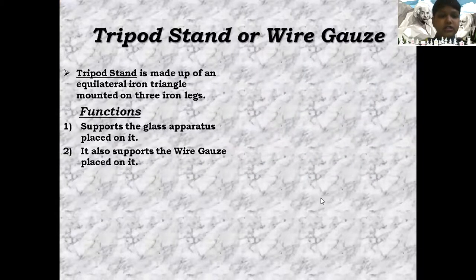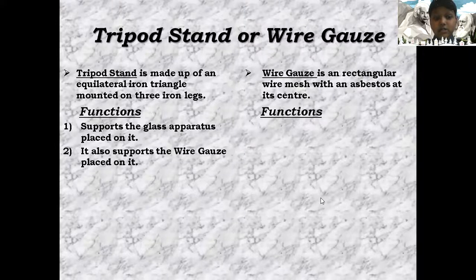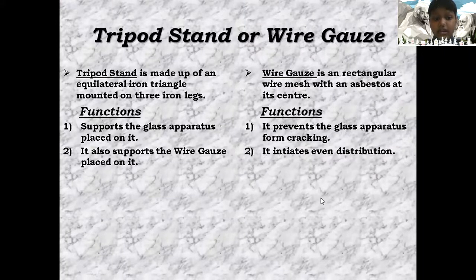Tripod stand: Made up of an equilateral iron triangle mounted on three iron legs.